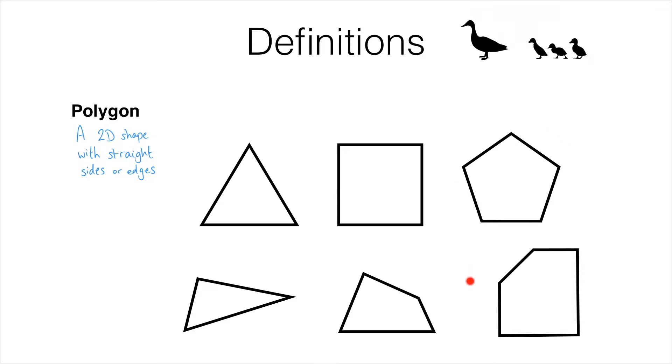And then on the right we have a couple of five-sided polygons and they have a special name. They are called pentagons. Six-sided shapes by the way are called hexagons, seven-sided shapes are called heptagons and eight-sided shapes are called octagons.